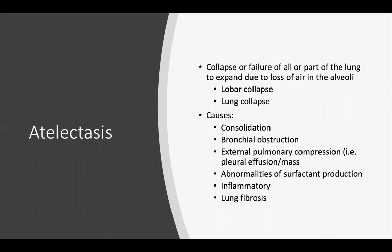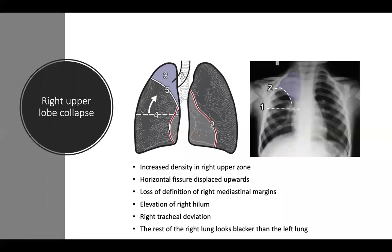Other etiologies may be inflammatory such as TB or fungal infection, and lung fibrosis. The previous film showed right upper lobe atelectasis. Radiographic features include increased density in the right upper zone, horizontal fissure displaced upwards, loss of definition of right mediastinal margins, elevation of the right hilum, right tracheal deviation, and the rest of the lung appearing blacker than the left lung.